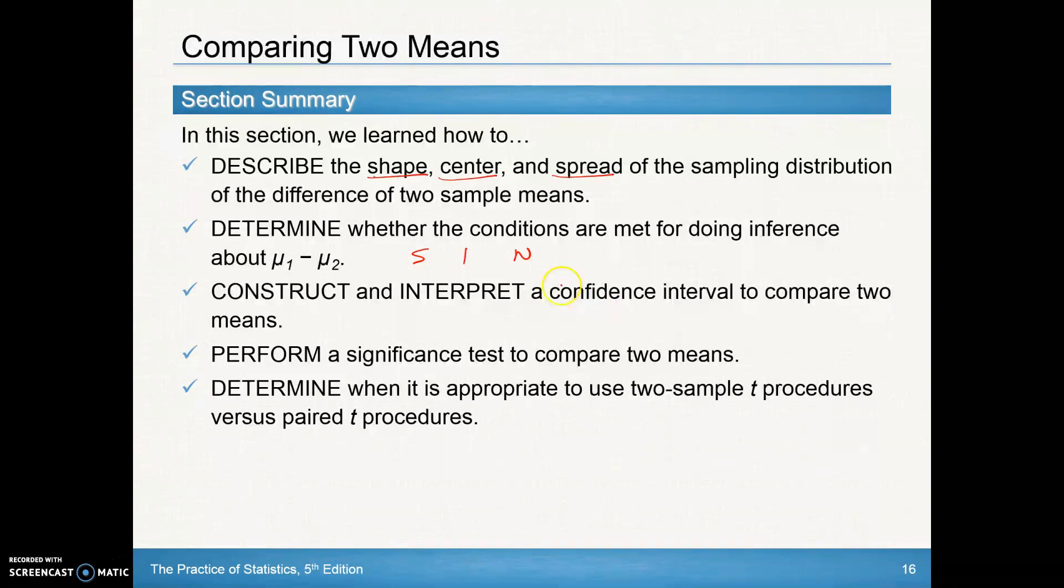You should be able to construct and interpret a confidence interval. That relates back to chapter eight material—being able to calculate the lower bound and the upper bound from our sample data to see if our null hypothesis is contained within that. You should be able to perform a significance test from chapter nine where we do our p-value compared to our alpha and make conclusions appropriately.